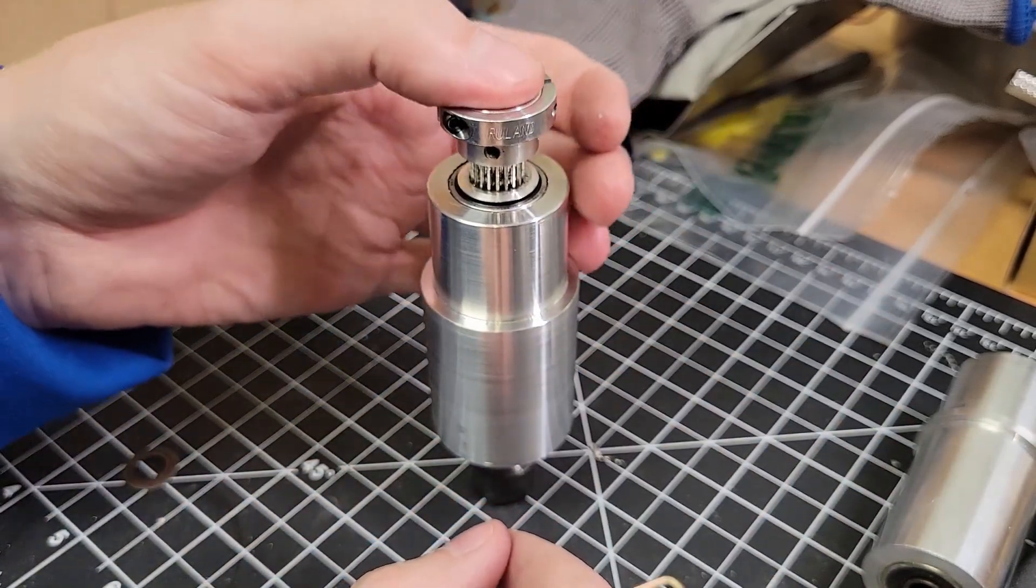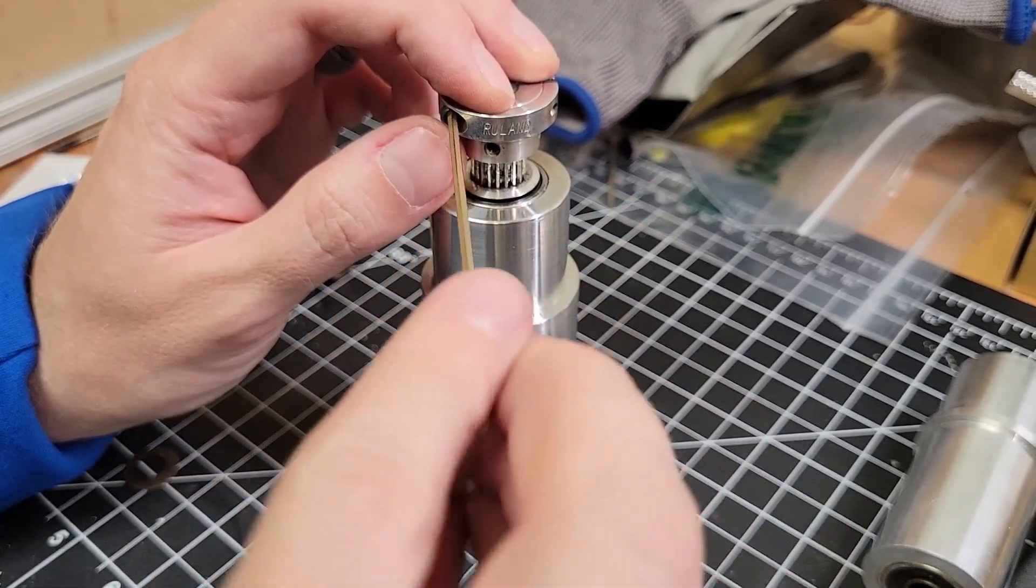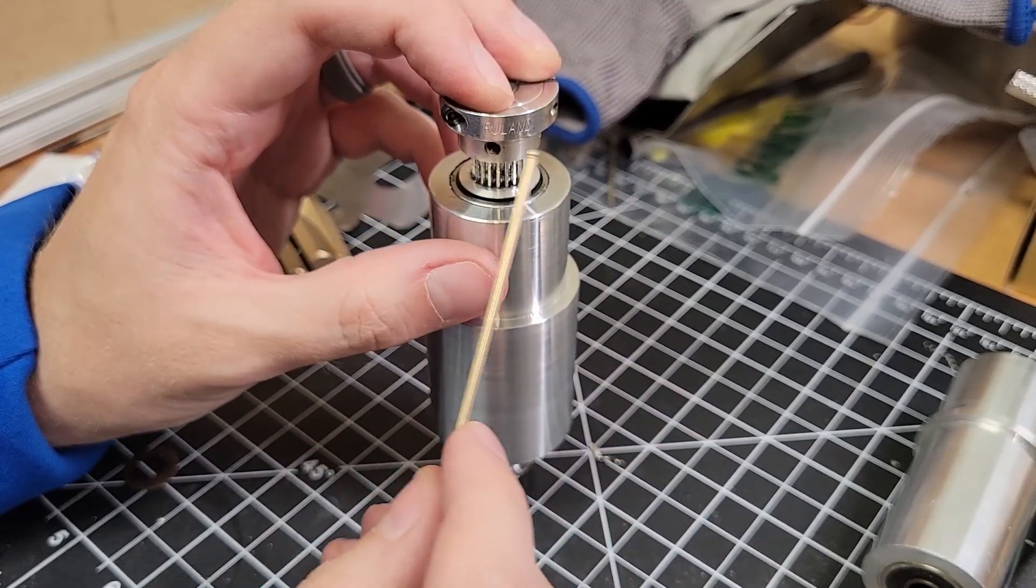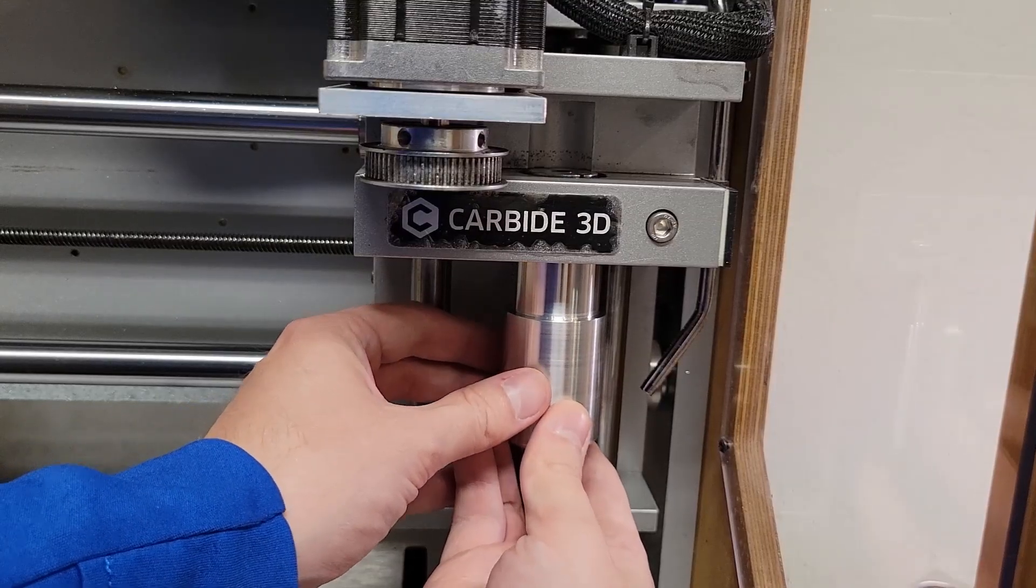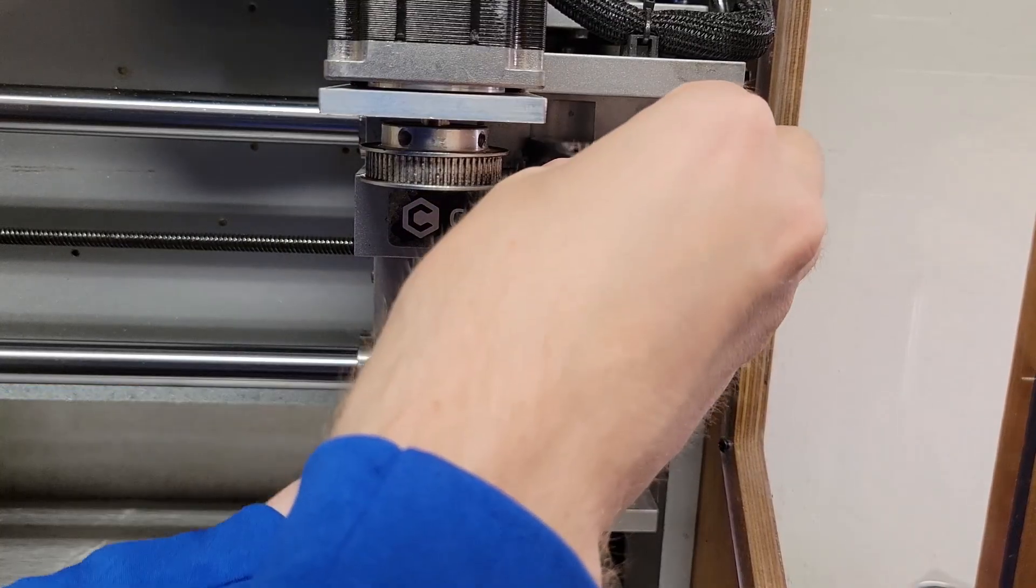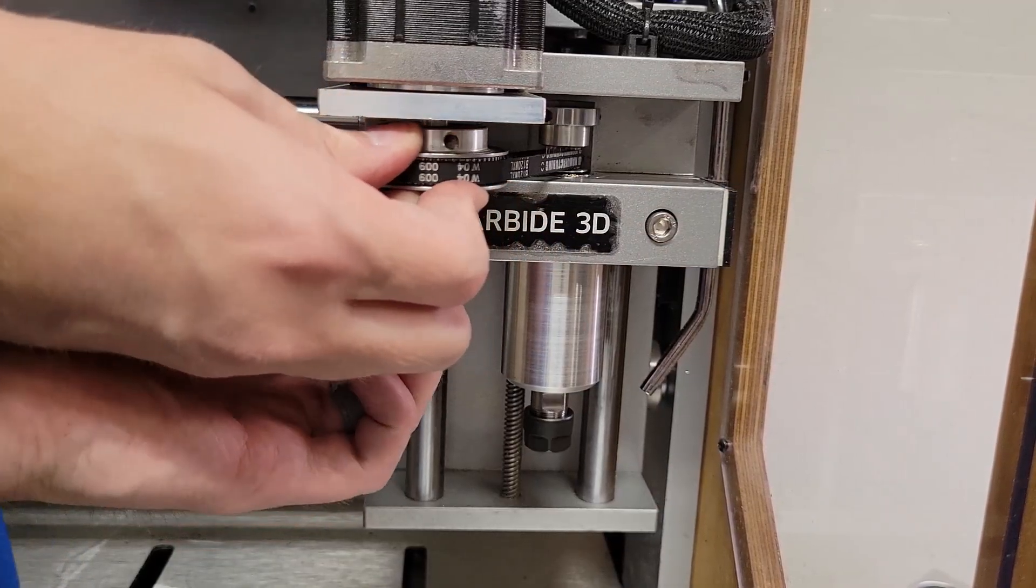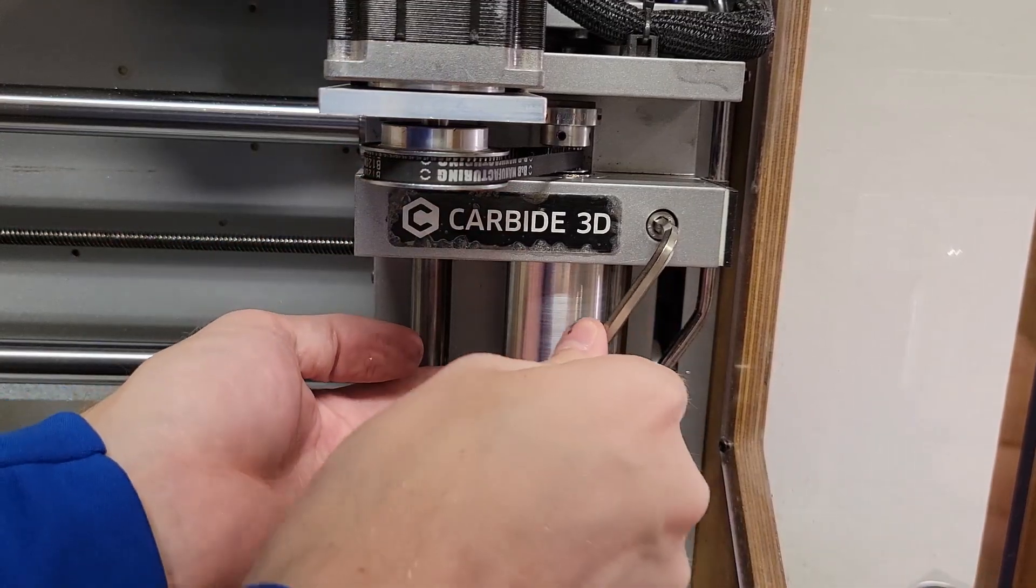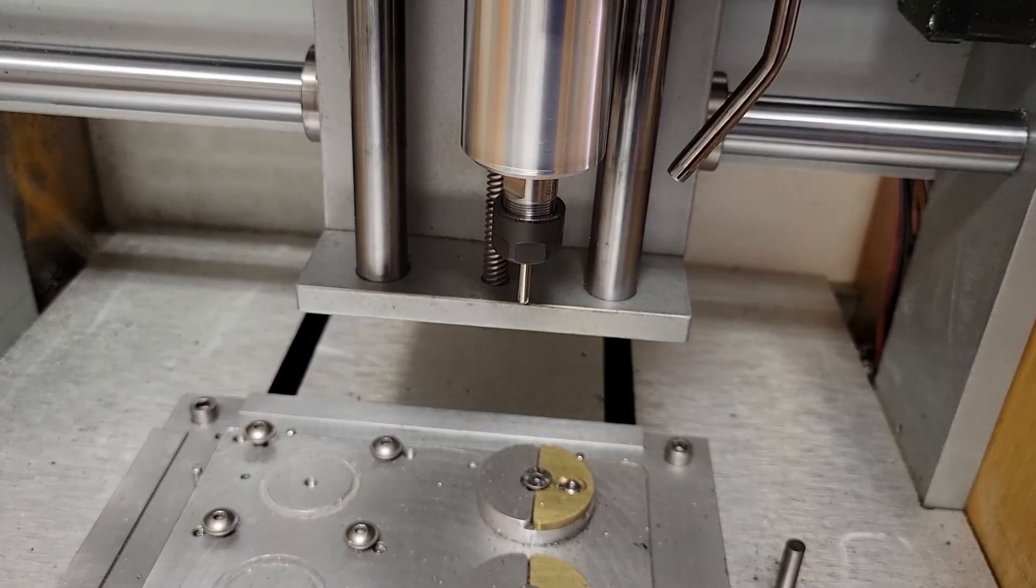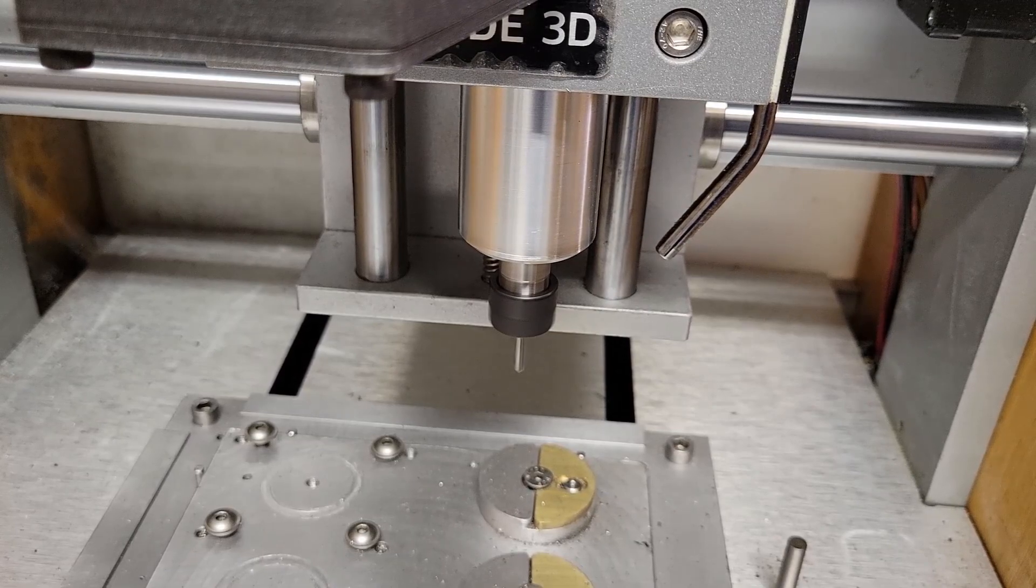I'm putting the shaft collar on - it's not part of the original Nomad. I just want a little extra help other than just these two set screws holding this whole assembly together. That's my tripod, so we'll do this by hand.